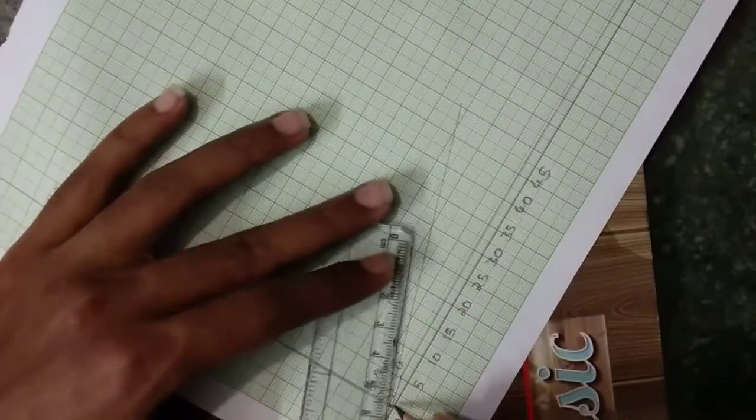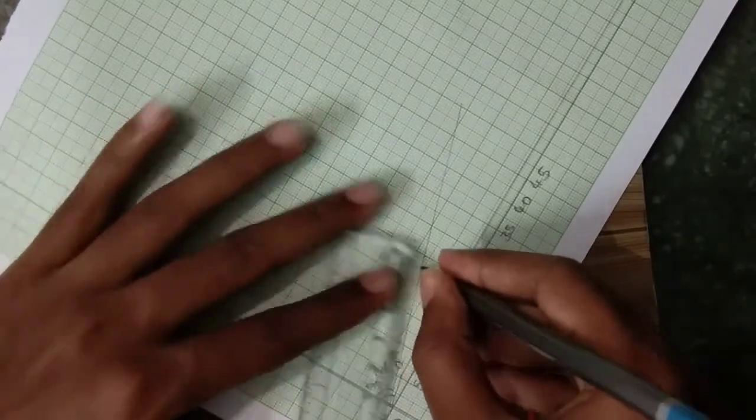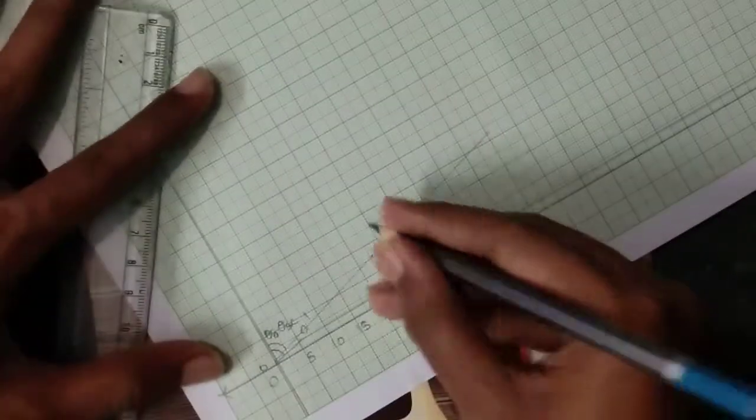From O, this is 4.3. I am just marking it as A.